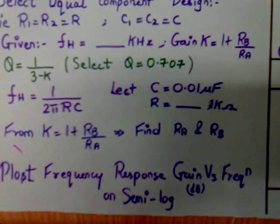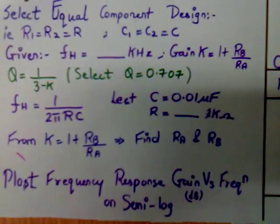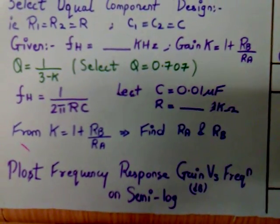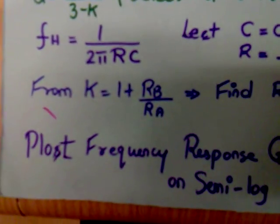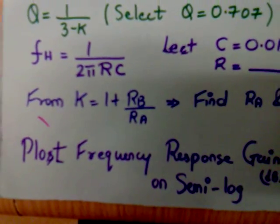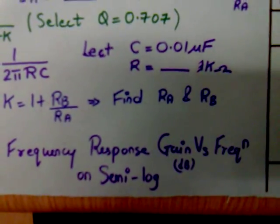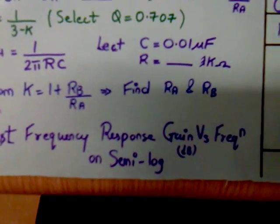If we take the value of C as 0.01 microfarad, we can easily calculate the value of R. From the gain formula, 1 plus RA upon RB, we can find the formula to find the values of RA and RB.